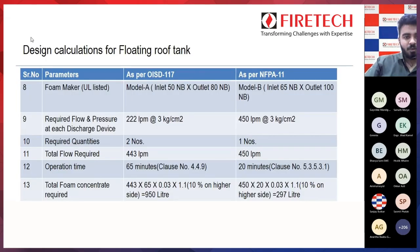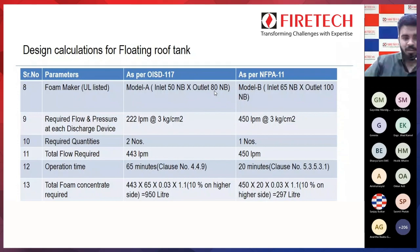For model selection of the foam maker, refer the manufacturer's data sheet based on total flow. We select Model A — inlet 50 NB, outlet 80 NB — as per OSD 117. For NFPA, Model B — inlet 65 NB, outlet 100 NB — is selected. The required flow and pressure at each discharge device is 222 lpm at 3 kg/cm² minimum pressure for OSD 117, and 450 lpm at 3 kg/cm² for NFPA 11.